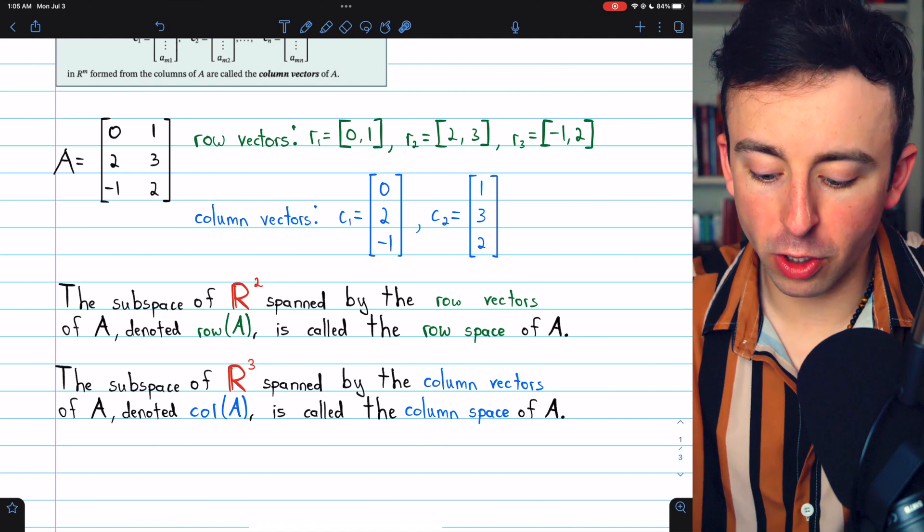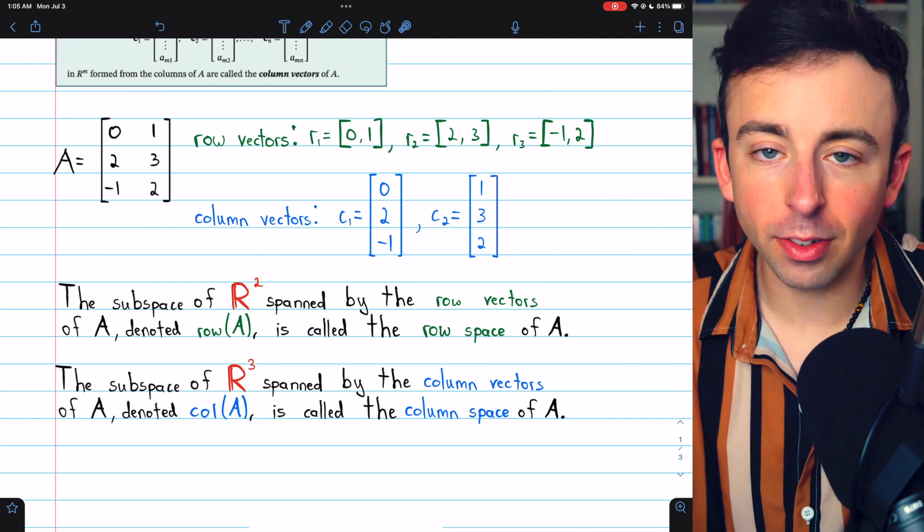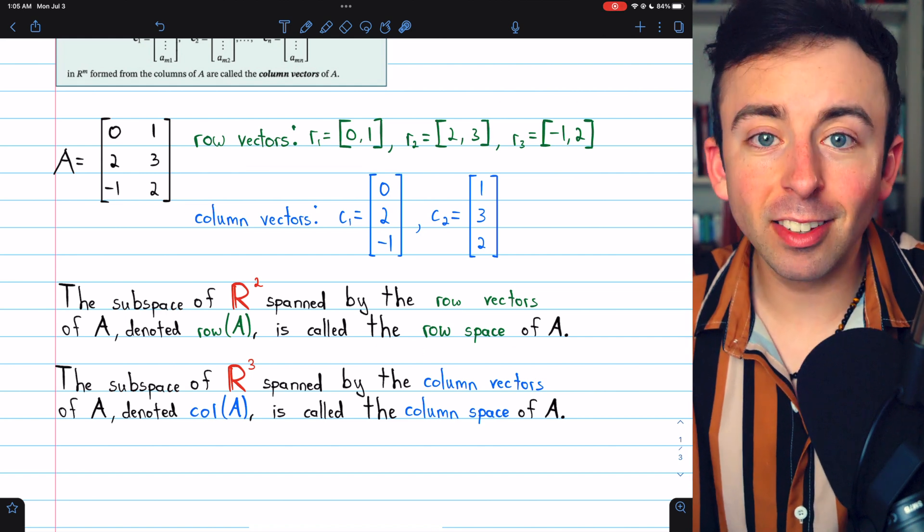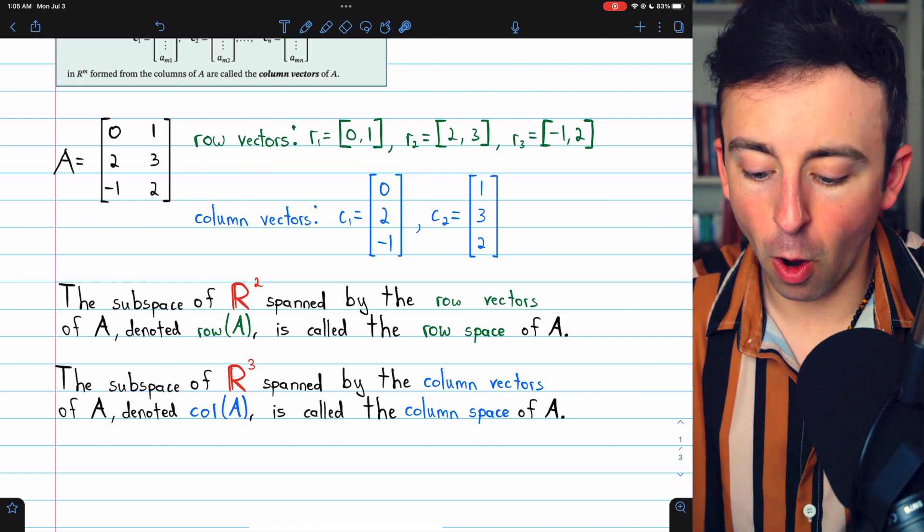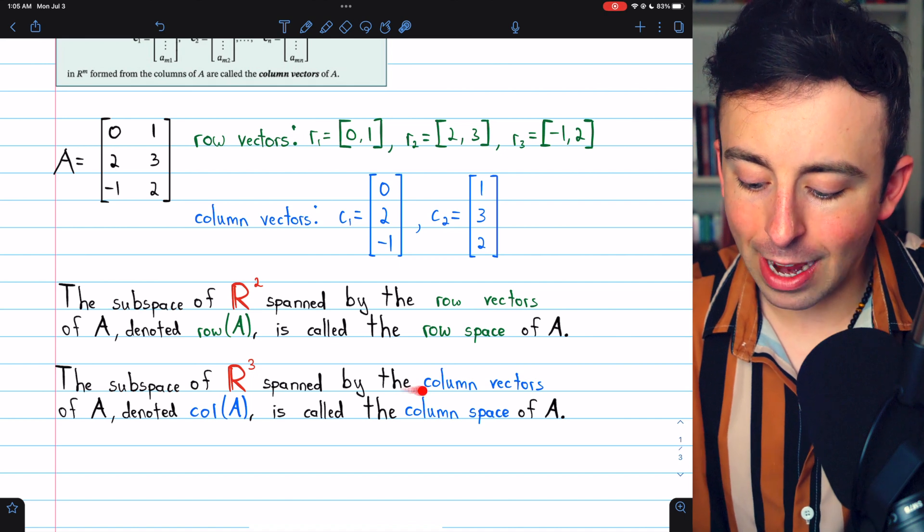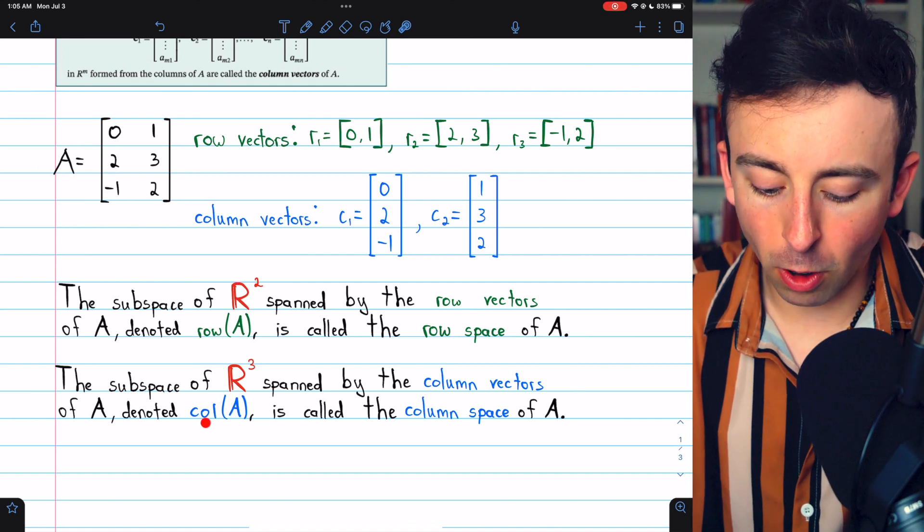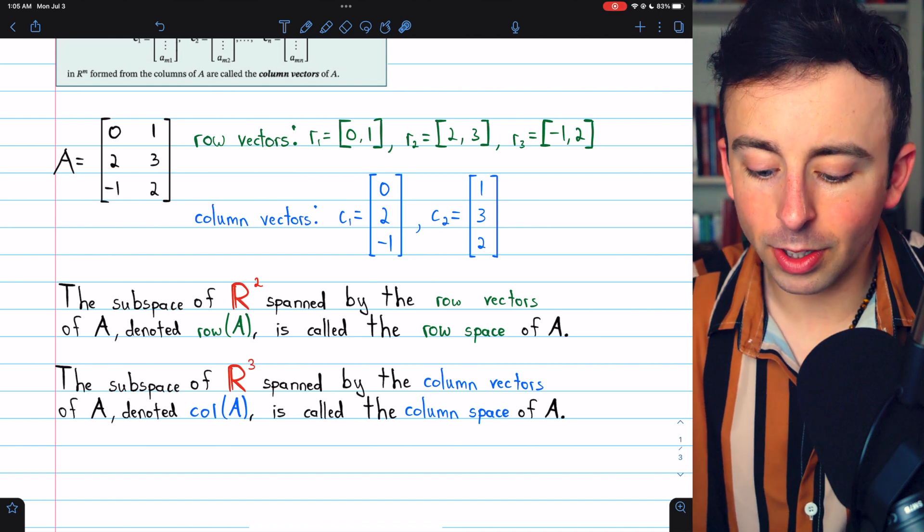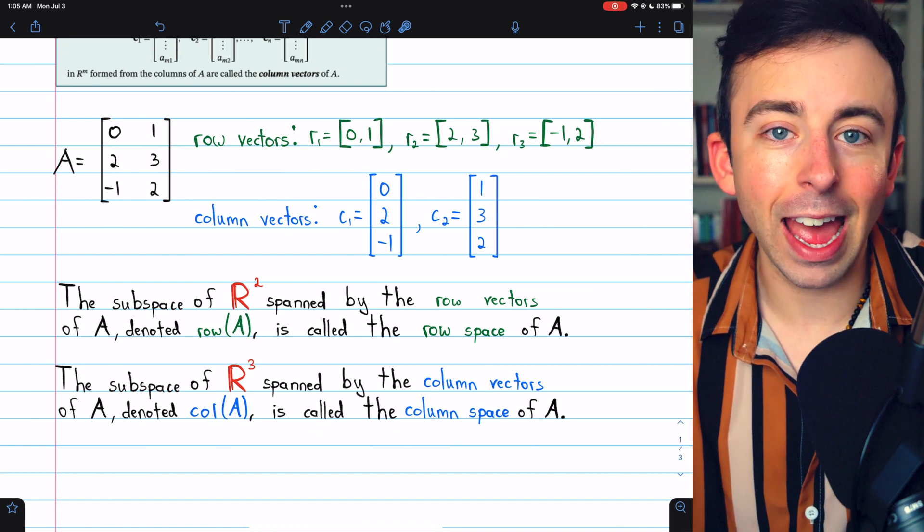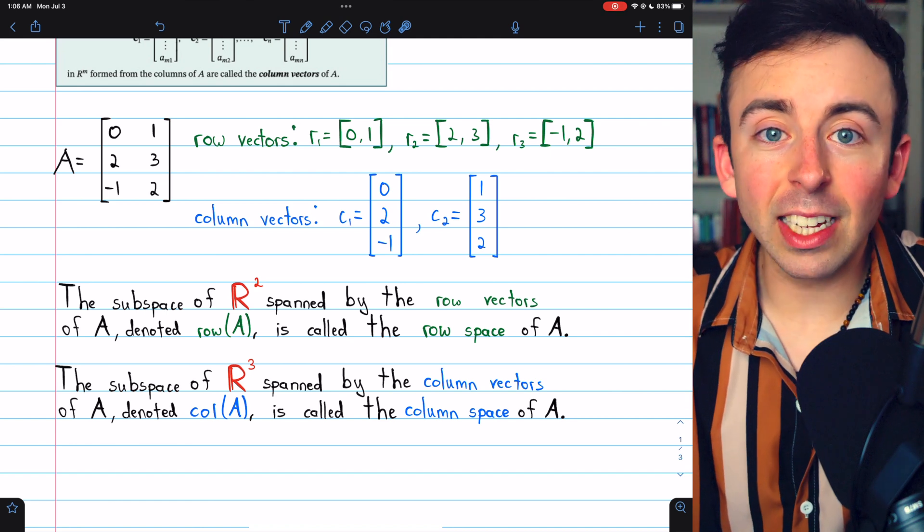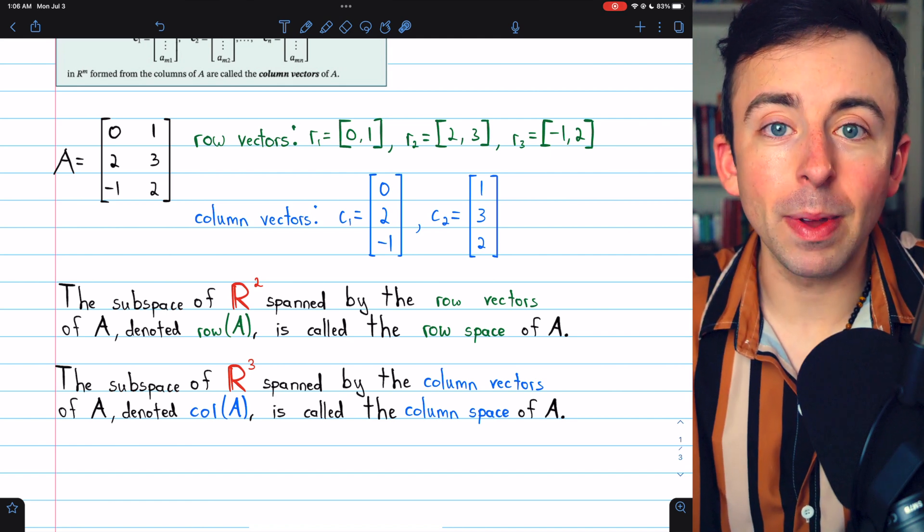And again, the subspace of R2 spanned by these row vectors, that's what we call the row space of the matrix. Similarly, the subspace of R3 that's spanned by the column vectors of our matrix A is denoted col of A, and it's called the column space of A, as you would expect. These are both very important subspaces. Link in the description to my lessons, going over them in depth.